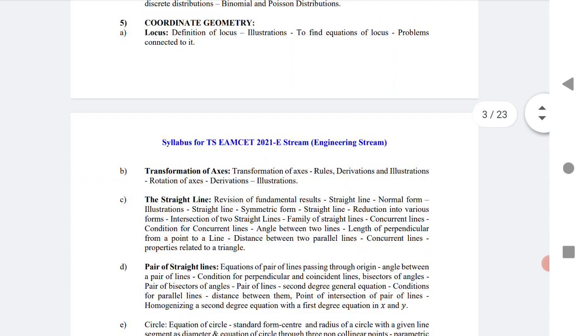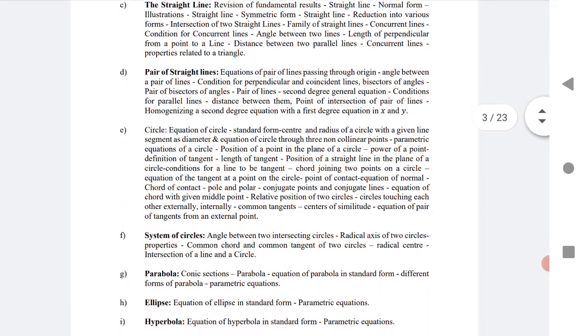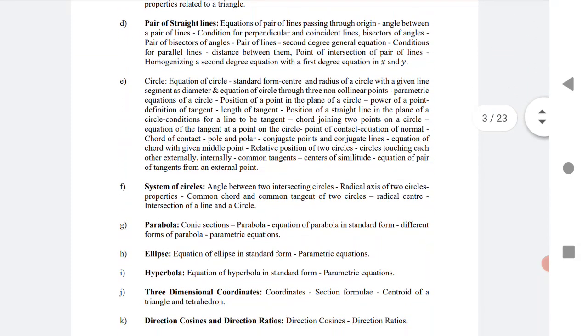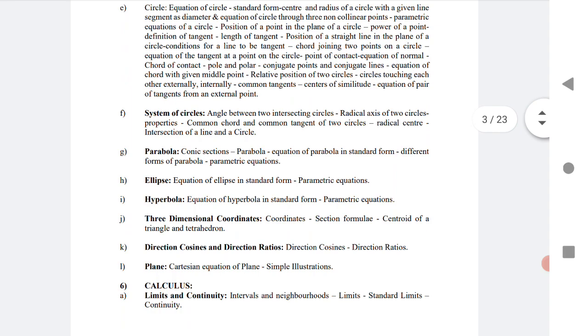a big chapter. First year's topics of coordinate geometry are locus, transformation, straight lines, and pair of straight lines. Second year is system of circles, circles, parabola, ellipse, hyperbola, and 3D: direction cosines and planes. These are very important chapters.